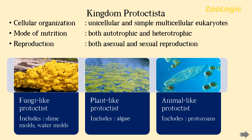Kingdom Protoctista includes unicellular and simple multicellular eukaryotes. 'Eu' means true and 'karyote' means nucleus, so they contain a true nucleus. Simple multicellular means they are a group of cells but not organized to form a tissue — they are a simple aggregation of cells. Mode of nutrition is both autotrophic and heterotrophic; autotrophic organisms can prepare their own food while heterotrophic ones cannot. They reproduce by both asexual and sexual means.